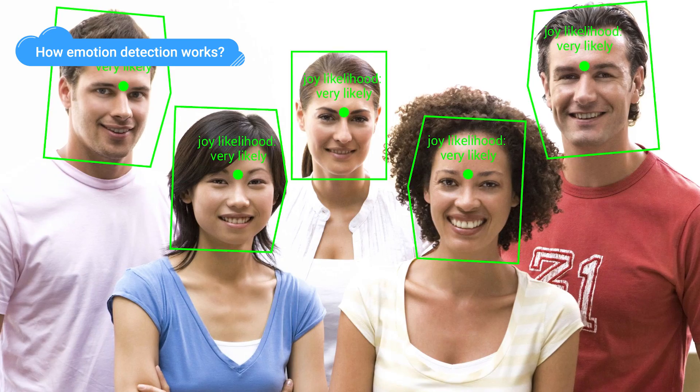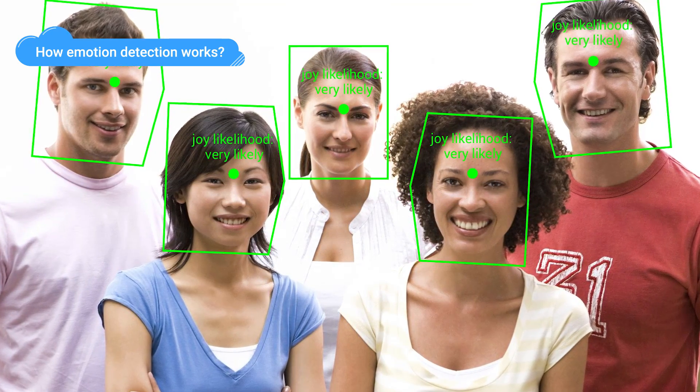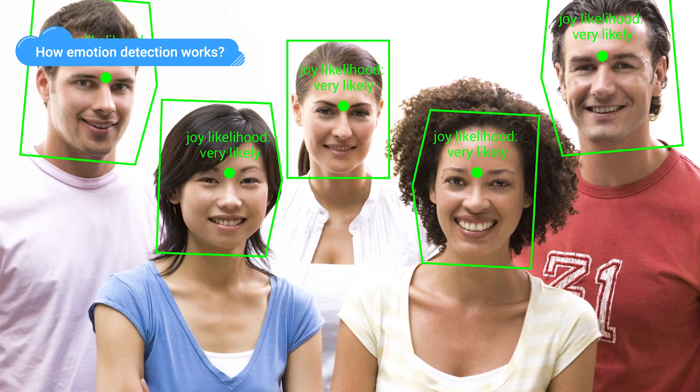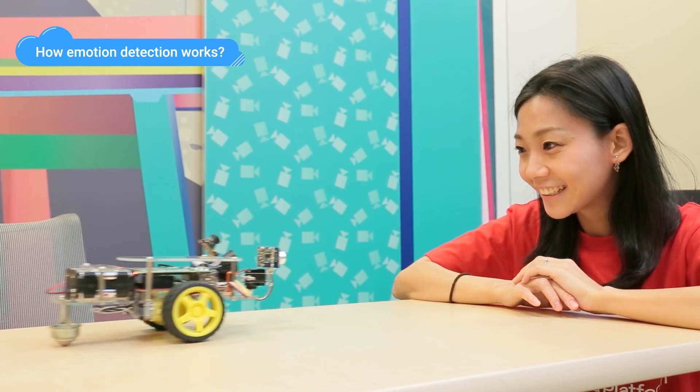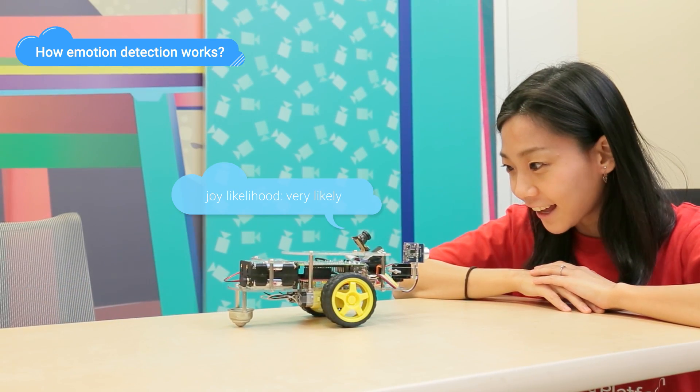It also detects emotions such as joy, anger, surprise, and sorrow. So the bot can move towards smiling faces or avoid anger or surprise faces.